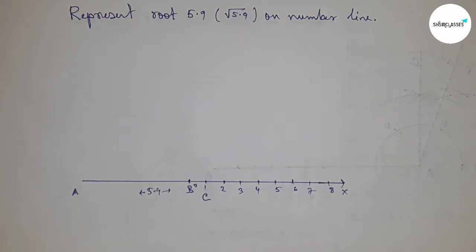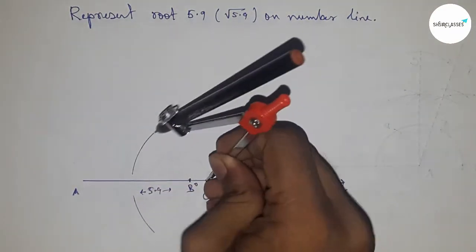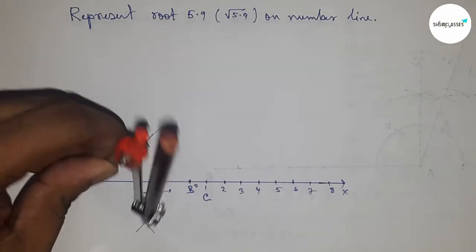Now we have to bisect the line AC. Put the compass on point C, take greater than half of AC, and draw arcs here. With the same length, cut the arcs this way.